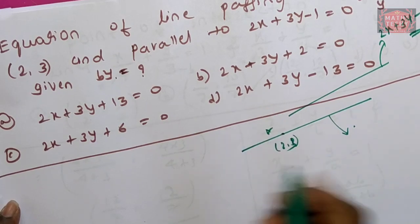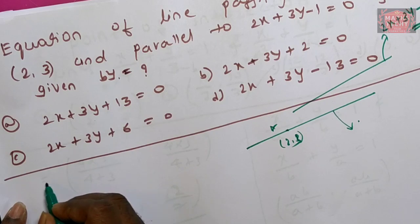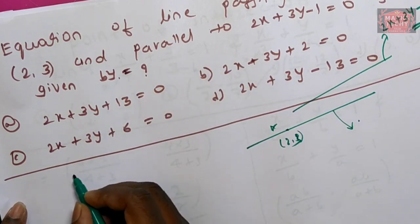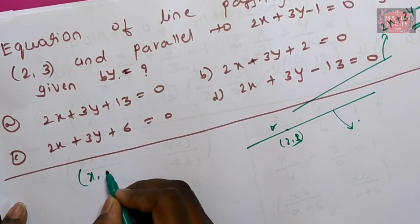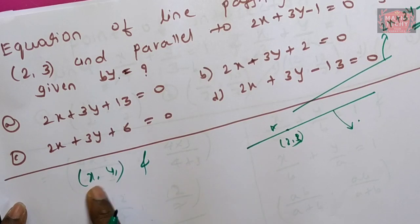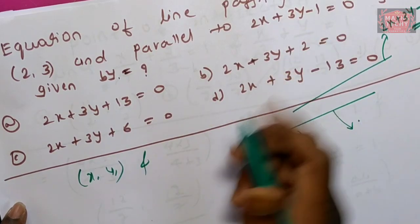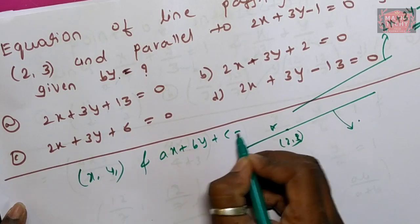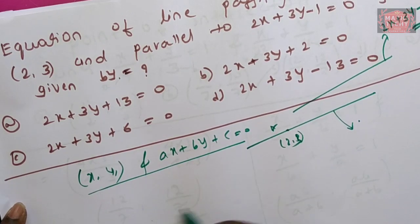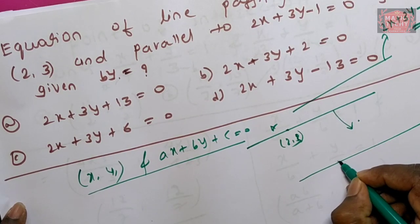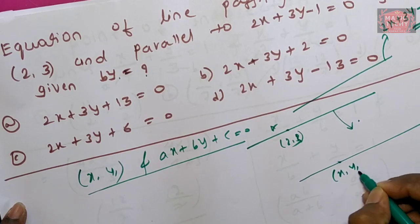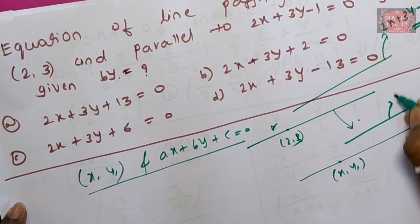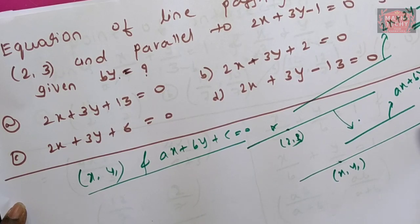This is a simple line. If it is passing through the point x1, y1, the line is passing through this point and parallel to this vector. That is the line ax plus by plus c equals zero. It is passing through the point x1, y1 and is parallel to a vector. What is that vector?